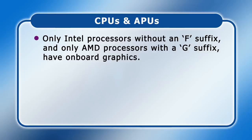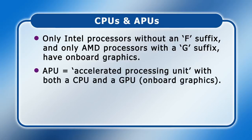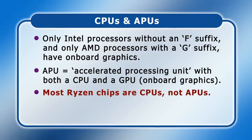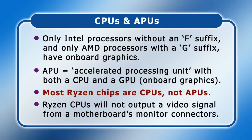AMD indeed markets their processors as either CPUs or APUs, with APU standing for Accelerated Processing Unit and describing a microprocessor that includes both a CPU and a GPU. I cannot stress strongly enough that most desktop Ryzen processors are CPUs and not APUs. This means that if you purchase a Ryzen chip without a G suffix and plug it into a motherboard, you will not get a video signal on its monitor connections. This is something I get an increasing number of messages about, so please be careful to choose a G suffix Ryzen processor if you're not fitting a separate graphics card in your computer.